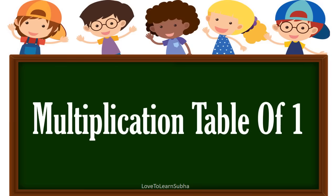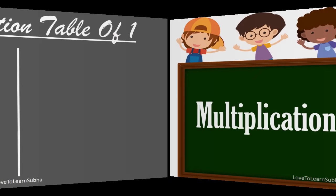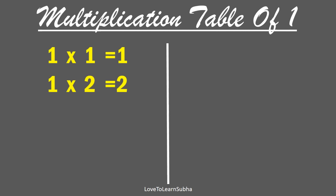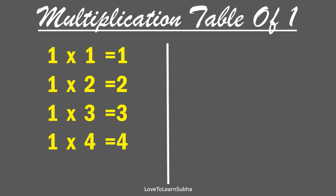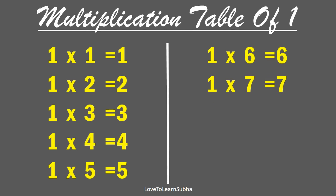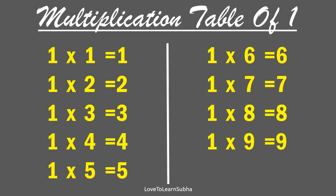Multiplication table of 1. 1 one is 1, 1 two is 2, 1 three is 3, 1 four is 4, 1 five is 5, 1 six is 6, 1 seven is 7, 1 eight is 8, 1 nine is 9, 1 ten is 10.